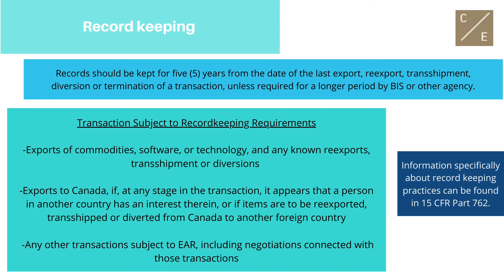Finally, we reach record keeping. Records should be kept for five years from the date of the last export, re-export, transshipment, diversion, or termination of a transaction, unless required for a longer period by BIS or other agencies. Transactions that are subject to record keeping requirements include: exports of commodities, software, or technology, and any known re-exports, transshipments, or diversions; exports to Canada if, at any stage in a transaction, it appears that a person in another country has an interest therein, or if items are to be re-exported, transshipped, or diverted from Canada to another foreign country; and any other transaction subject to EAR, including negotiations connected with those transactions. Information specifically about record keeping practices can be found in 15 CFR Part 762.